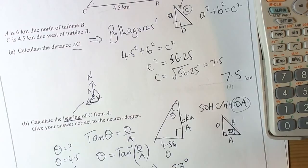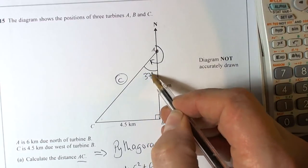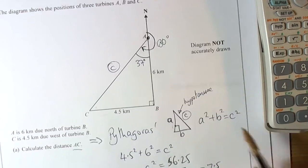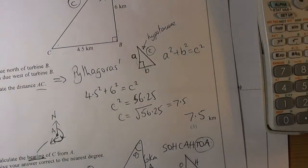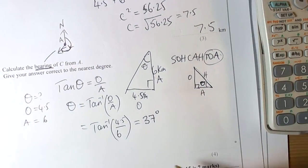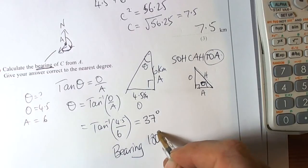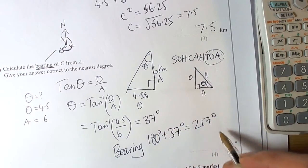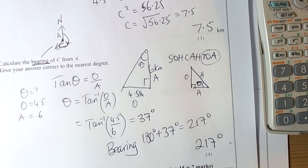Because we want the bearing, we realize that the angle there is now 37 degrees. We have got the 180 degrees for the half turn there, so the bearing itself will be found by doing 180 degrees plus the 37 degrees, which gives us 217 degrees. So our final answer will be 217 degrees.